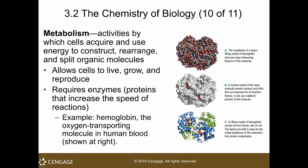So metabolism — because we have monomers and polymers — how do we form polymers and how do we break them down to create monomers? Metabolism refers to all activities in the cell by which cells acquire and use energy to construct, rearrange, and split organic molecules. It is necessary for living, growing, and reproducing. Each metabolic reaction inside your body requires an enzyme. Though the illustration here is hemoglobin, hemoglobin is not an enzyme — it is a transport molecule. An enzyme is a catalyst that speeds up reactions, while hemoglobin transports oxygen throughout your body.